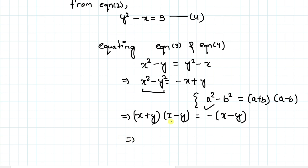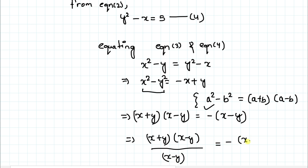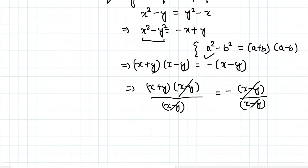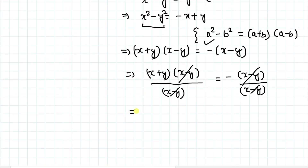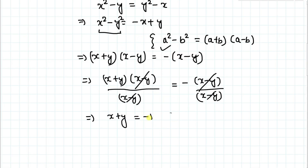Dividing both sides by (x minus y), the (x minus y) terms cancel out on both sides. This gives us x plus y equals minus 1. Let's call this equation 5.